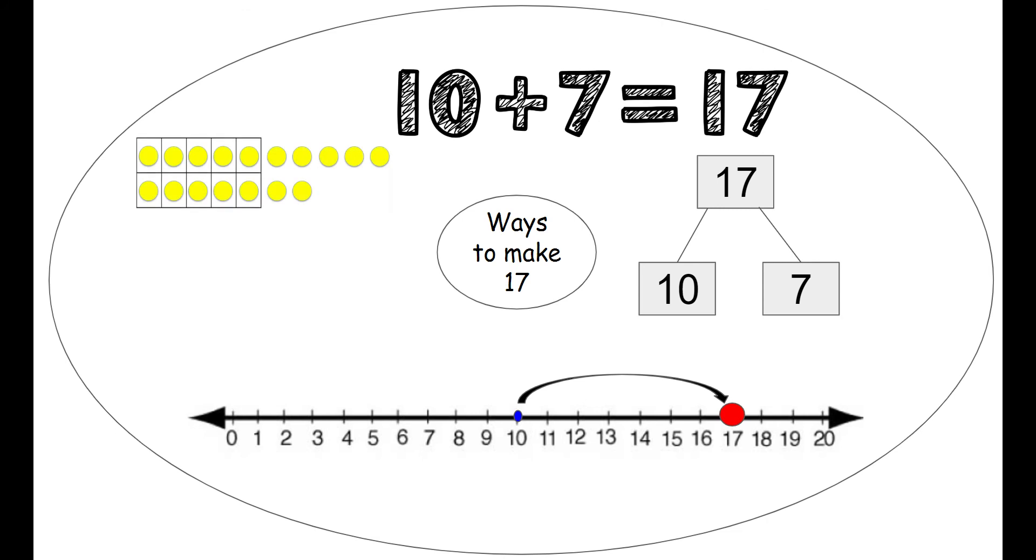We can use our 10 frame to make the number 17. So we see one 10 frame all filled. So without even counting I know that that's how many. 10. Very good. And then I count 7 more left over. So I can count on 10, 11, 12, 13, 14, 15, 16, 17.